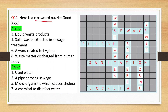Next is a crossword puzzle. For the across clues: number 3 - liquid waste products - the answer is sewage, S-E-W-A-G-E. Number 4 - solid waste extracted in sewage treatment - the answer is sludge, S-L-U-D-G-E. Number 6 - a word related to hygiene - the answer is sanitation, S-A-N-I-T-A-T-I-O-N.